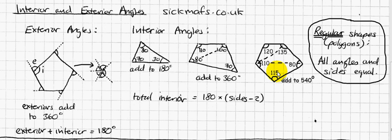Now, you'll notice, this has got three sides, which gives you one triangle. This has got four sides, which gives you two triangles. And five sides gives you three triangles.